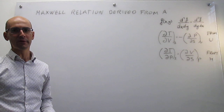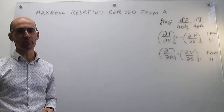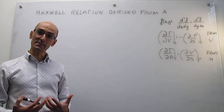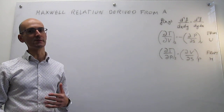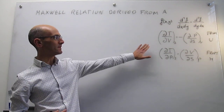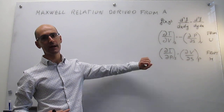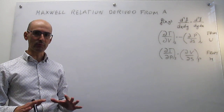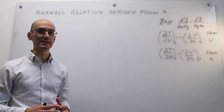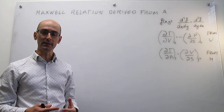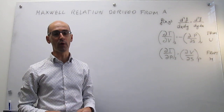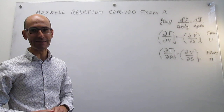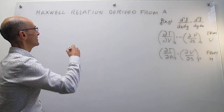In this video we're going to perform a derivation of a Maxwell relation starting from the Helmholtz energy. The steps we're going to follow here are very similar to what we have already done for the internal energy and the enthalpy, so we'll go a little bit quicker than usual. The first thing that we need is a fundamental equation for the Helmholtz energy, which we're going to obtain simply by looking at its definition.